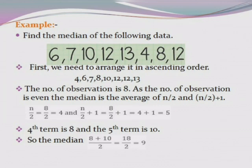Find the median of the following data: 6, 7, 10, 12, 13, 4, 8, 12. The number of observations is 8, which is even. The first step is to arrange them in ascending order: 4, 6, 7, 8, 10, 12, 12, 13.